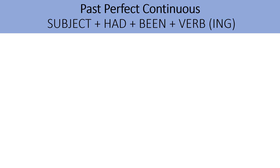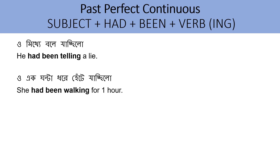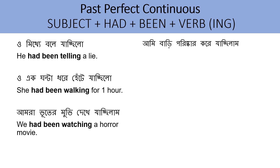Now Past Perfect Continuous. Structure: Subject + had + been + verb in its -ing form. ও মিথ্যে বলে যাচ্ছিল — He had been telling a lie. Subject 'he', then 'had', then 'been', then verb in -ing form: 'telling'. ও এক ঘণ্টা ধরে হেঁটে যাচ্ছিল — She had been walking for one hour. আমরা ভূতের মুভি দেখে যাচ্ছিলাম — We had been watching a horror movie. আমি বাড়ি পরিষ্কার করে যাচ্ছিলাম — I had been cleaning the house.